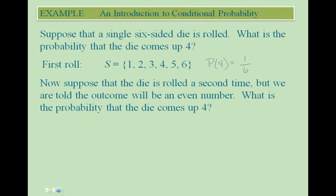Now suppose that the die is rolled a second time, but we are told that the outcome will be an even number. What is the probability that the die comes up 4? On our second roll, we only have the possible outcomes 2, 4, and 6. So now the probability of getting a 4 in this case is equal to 1 out of 3.